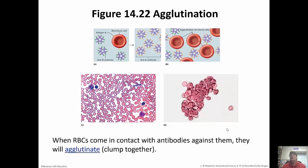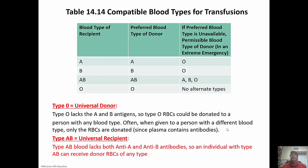When red blood cells come into contact with the antibodies against them, they agglutinate — clump together. Type O is known as the universal donor because it doesn't have any antigens to elicit a response from the immune system, so everybody can receive type O blood. Type AB is known as the universal recipient because it doesn't have any antibodies, so it can't attack any blood. Type O can only receive type O — doesn't seem fair — but type AB can receive any blood at all.